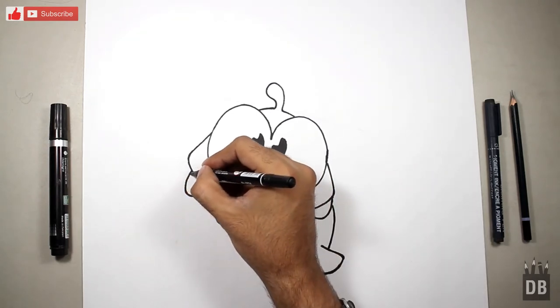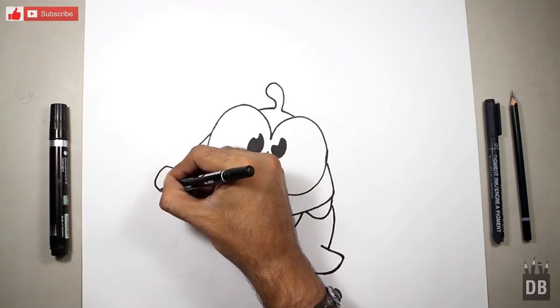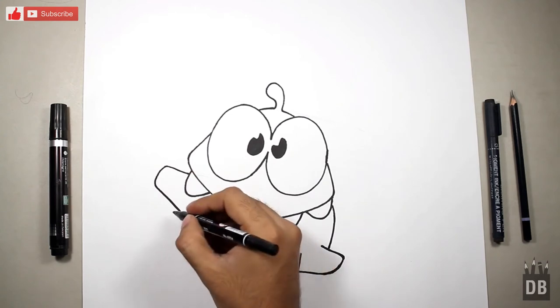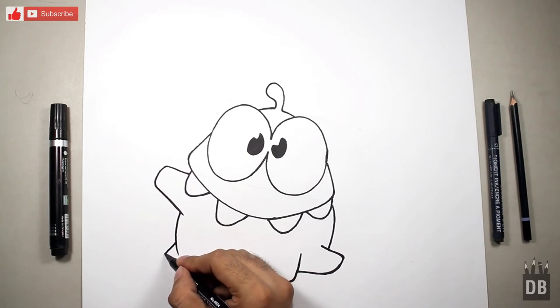Now he is waving at us, so a line from here. Okay, and make a C. Okay, and there is another leg.